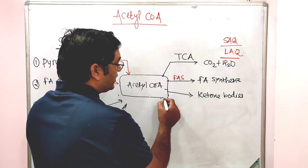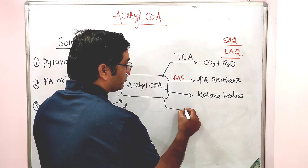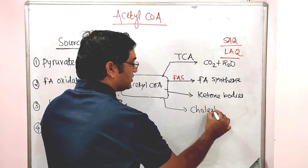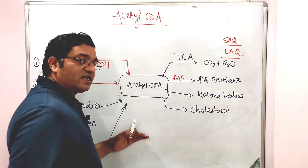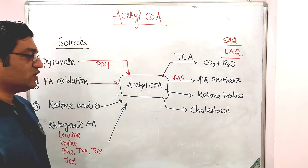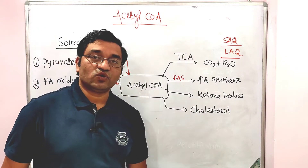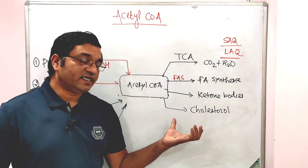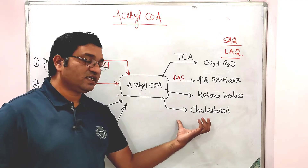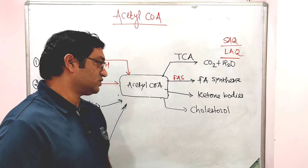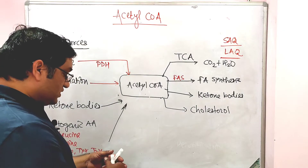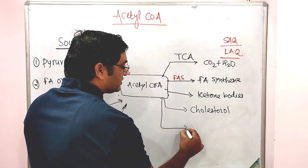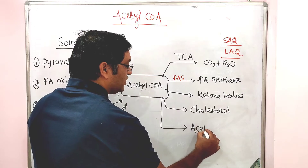Acetyl coenzyme A is also a precursor for cholesterol synthesis. The rate-limiting enzyme in cholesterol synthesis is HMG-CoA reductase. Additionally, acetyl coenzyme A is important in the synthesis of acetylcholine.